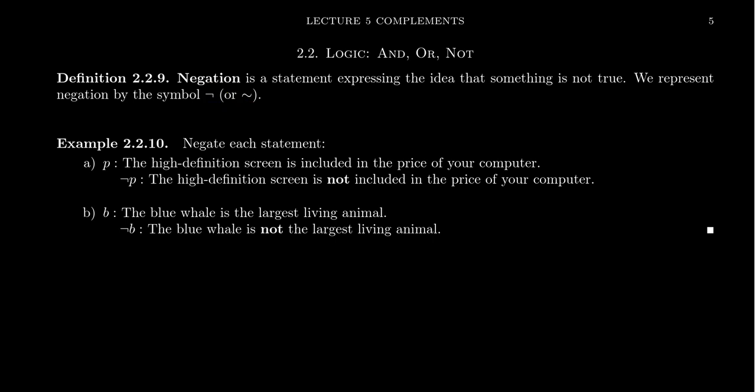So let's negate the following statements. Take statement P: the high-definition screen is included in the price of the computer. It's a statement — it's either true or false. Depending on the computer you're buying and the store you're buying from, it might be sometimes true, sometimes false. We need more information, but it is a statement that's either true or false. The negation would be to put in the word 'not,' so not P means the high-definition screen is not included in the price of your computer.